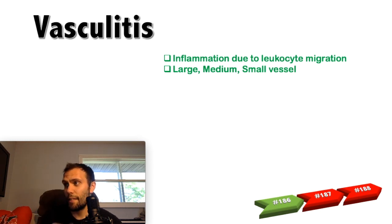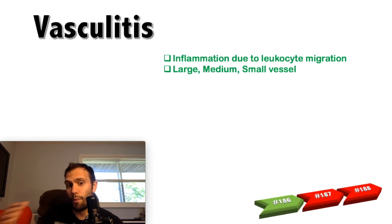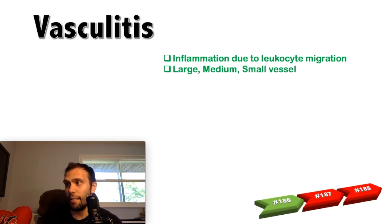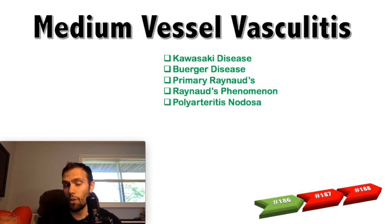In general, and this goes for all the vasculitides, we'll see signs of inflammation leading to increases in the erythrocyte sedimentation rate and CRP. They can have anemia, increased white blood cell counts, and even eosinophilia — these are very common findings. Each vasculitis has unique features that help us differentiate one disease from another.